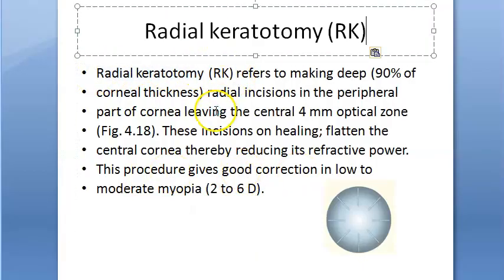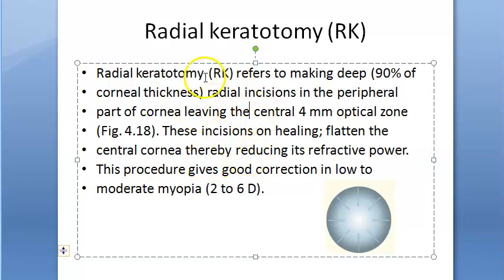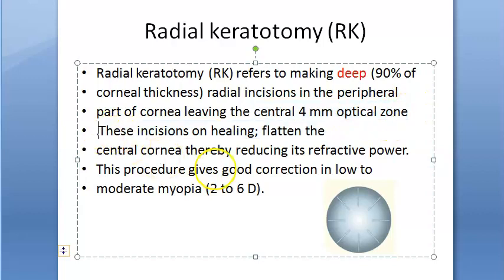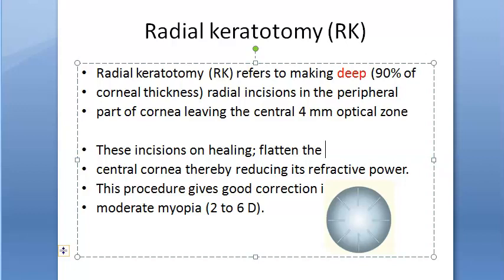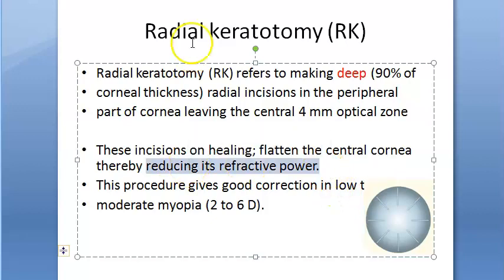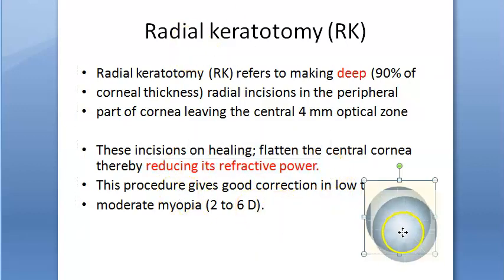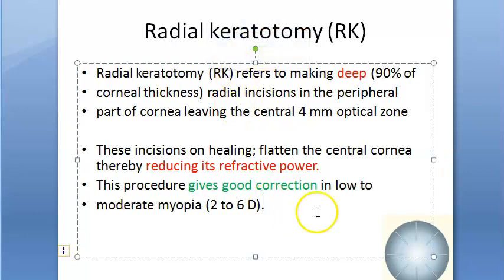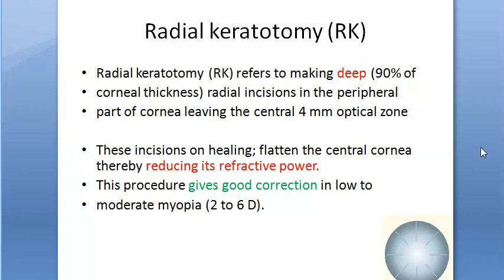Radial keratotomy is no longer used because now they have LASIK and others. Radial keratotomy refers to making deep radial incisions in the peripheral part of the cornea, leaving the central 4 mm optical zone. These incisions on healing flatten the central cornea, thereby reducing its refractive power. This procedure gives good correction in low to moderate myopia, but not in high myopia.